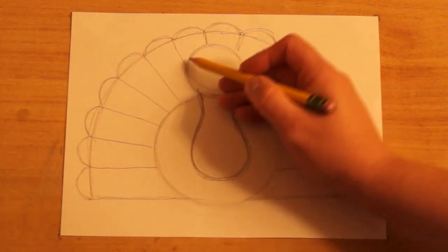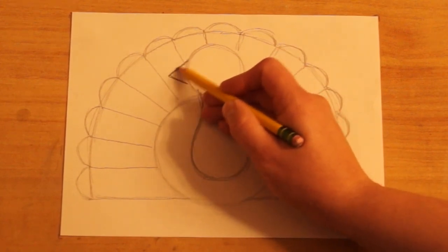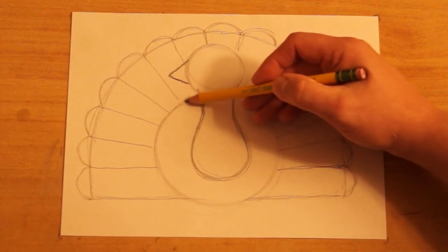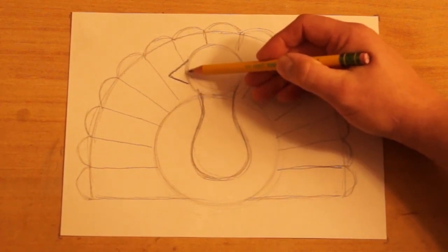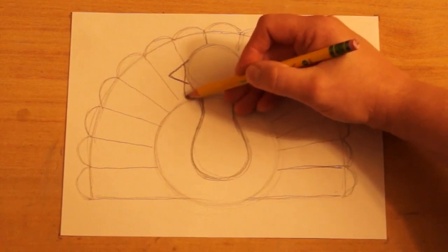Okay, let's make the beak next. I'm going to go up here and make a triangle that sticks out to the left. And then I want to put a little gobbler thing that hangs off, a piece of skin that hangs off around the beak.